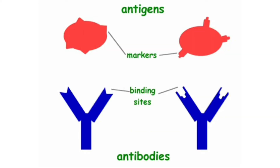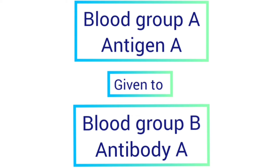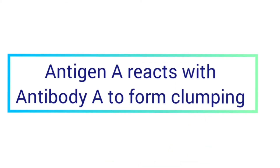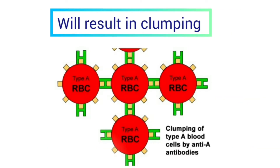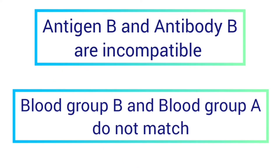The antigens and antibodies work against each other. When blood containing the opposite antigen is transfused into the body of a person, the antibodies of the recipient will attack the donated blood and cause clumping. Antigen A and antibody A are incompatible — meaning blood group A and blood group B are incompatible, since blood group A has antigen A and blood group B has antibody A, so clumping will occur. Similarly, antigen B and antibody B — blood group B and blood group A — are again incompatible. Therefore, blood transfusion is done very carefully only after matching the blood groups of the donor and recipient.